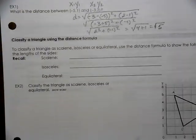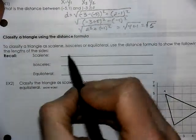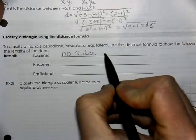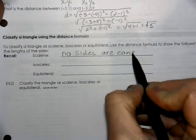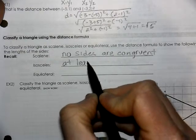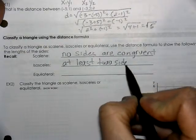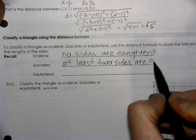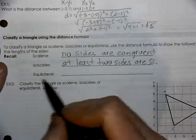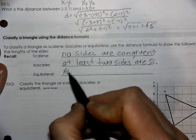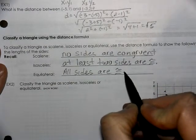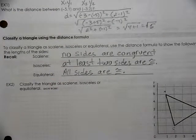For classifying this triangle, a scalene triangle, no sides are congruent. Isosceles, at least two sides are congruent. That would also mean that two angles are congruent. And then equilateral, all sides are congruent and all angles would happen to be congruent in that situation also.